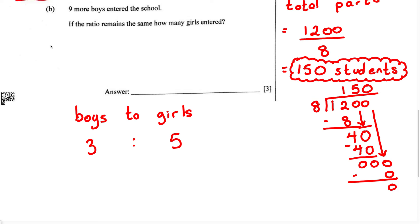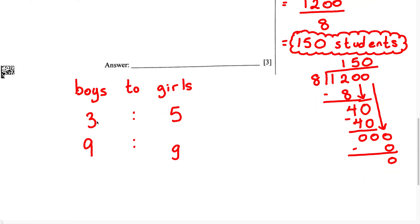Now it says nine more boys entered the school. If the ratio remains the same, how many girls entered? Let's set this proportion up. They tell us nine more boys entered the school, so I'm going to write 9 under the boys section. They want us to find out how many girls entered, but they don't tell us the number of girls. We're going to use a variable to represent this — I'm going to use the variable G. Once we have this information, we set up the proportion as three over nine equals five over G.